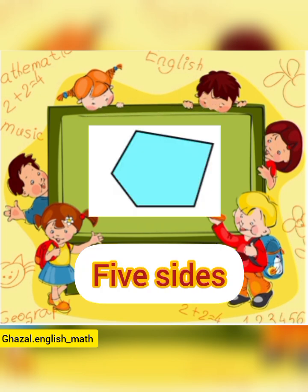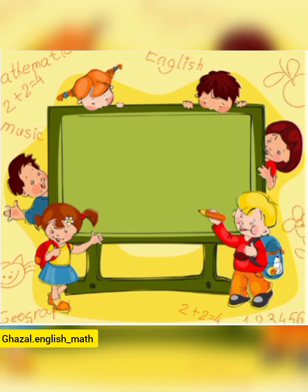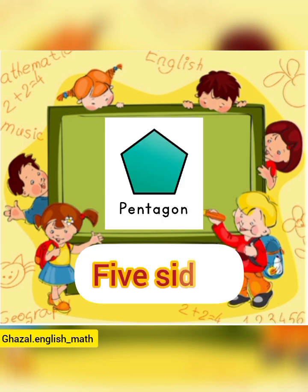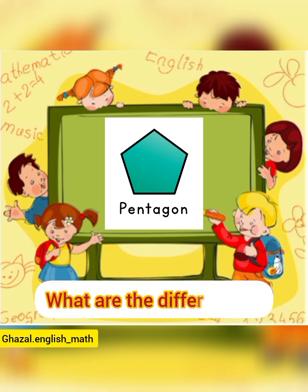The first example was a pentagon with five sides and the second one was another pentagon with five sides. Then the teacher asked: what are the differences between them?